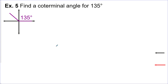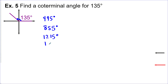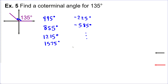Example 5: find all the co-terminal angles for 135 degrees — this angle right here. We could go around one additional time: 495 degrees. Go around again: 855 degrees. And again, and again. Going backwards instead: about negative 225 degrees. Back again: negative 585 degrees. And so on. How many co-terminal angles are there? Infinite. So we don't have any way to list them all — that's why we have general form.